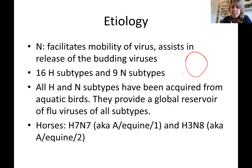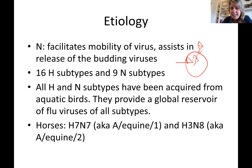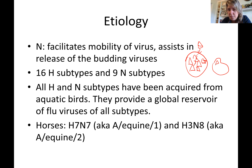To illustrate: here we have a host cell and a virus. The hemagglutinin allows the virus to bind to the cell, and as it binds it injects its RNA material inside the cell, which then starts to replicate. It is the neuraminidase that allows the virus to bind back to the cell and bud out, taking the lipid envelope with it.